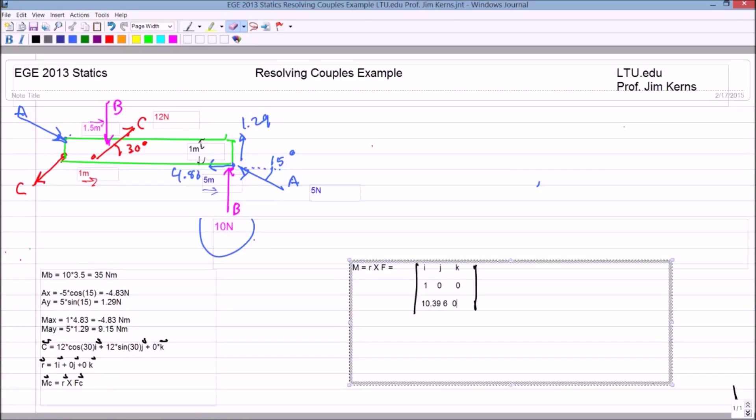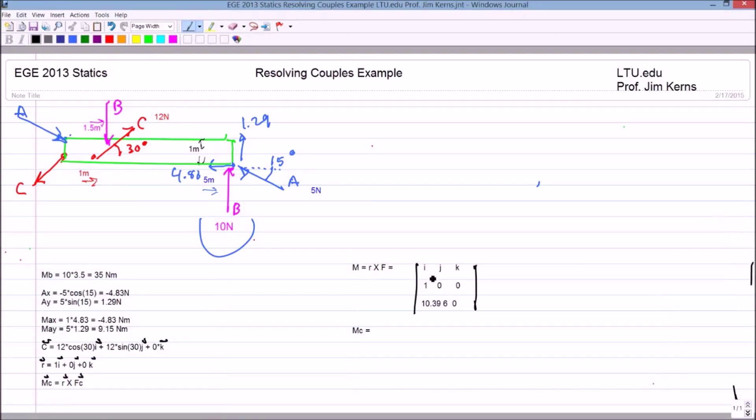So we can evaluate that determinant, and what we end up with is that our moment for vector C is equal to, well, if I look at the i component, I'm going to do the determinant of the zero, the zero minus zero times six, so that's going to be zero.